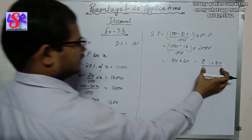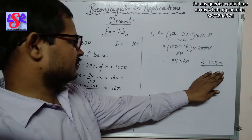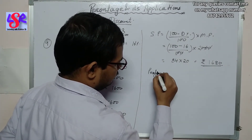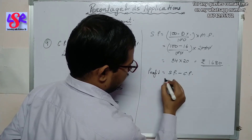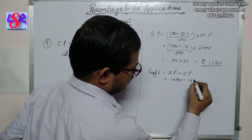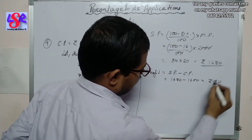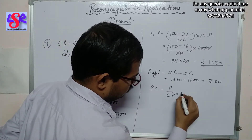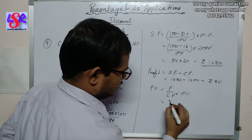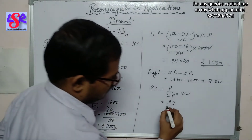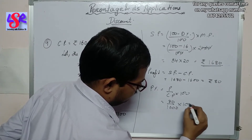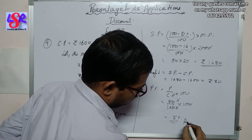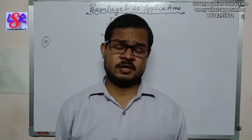Now we compare the SP with the CP. The profit is SP minus CP = 1680 minus 1600 = rupees 80. Then profit percent = profit / CP × 100 = 80/1600 × 100 = 5%. So the profit percent for this question is 5%.